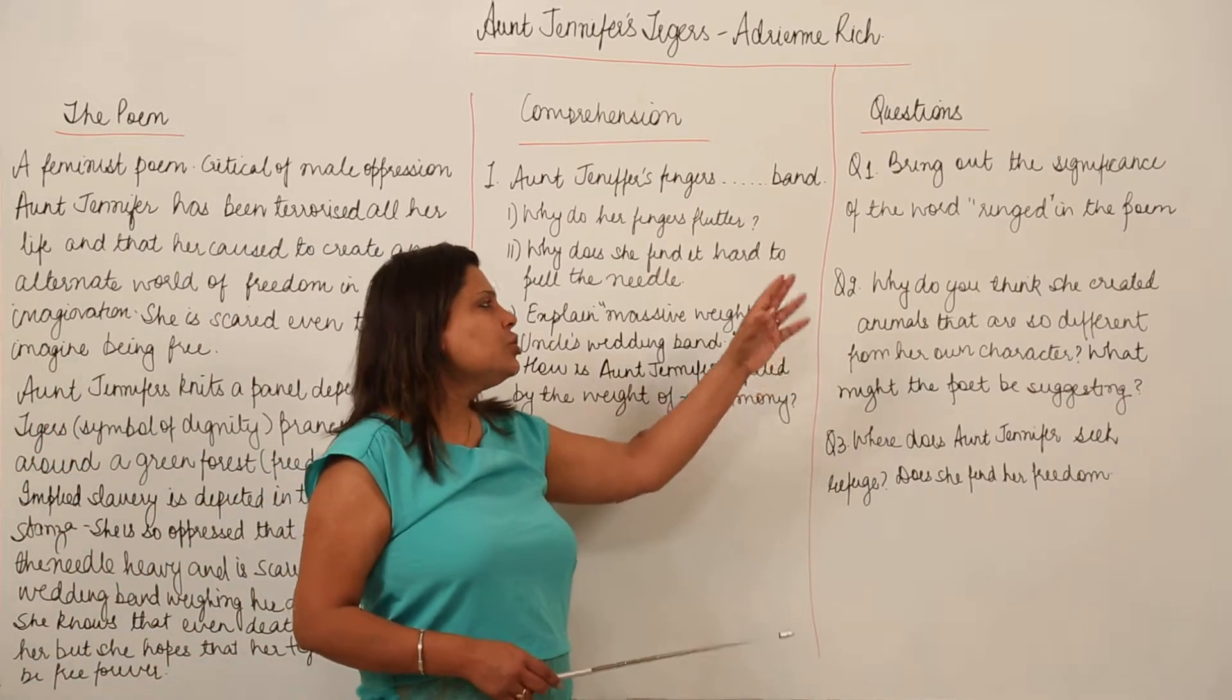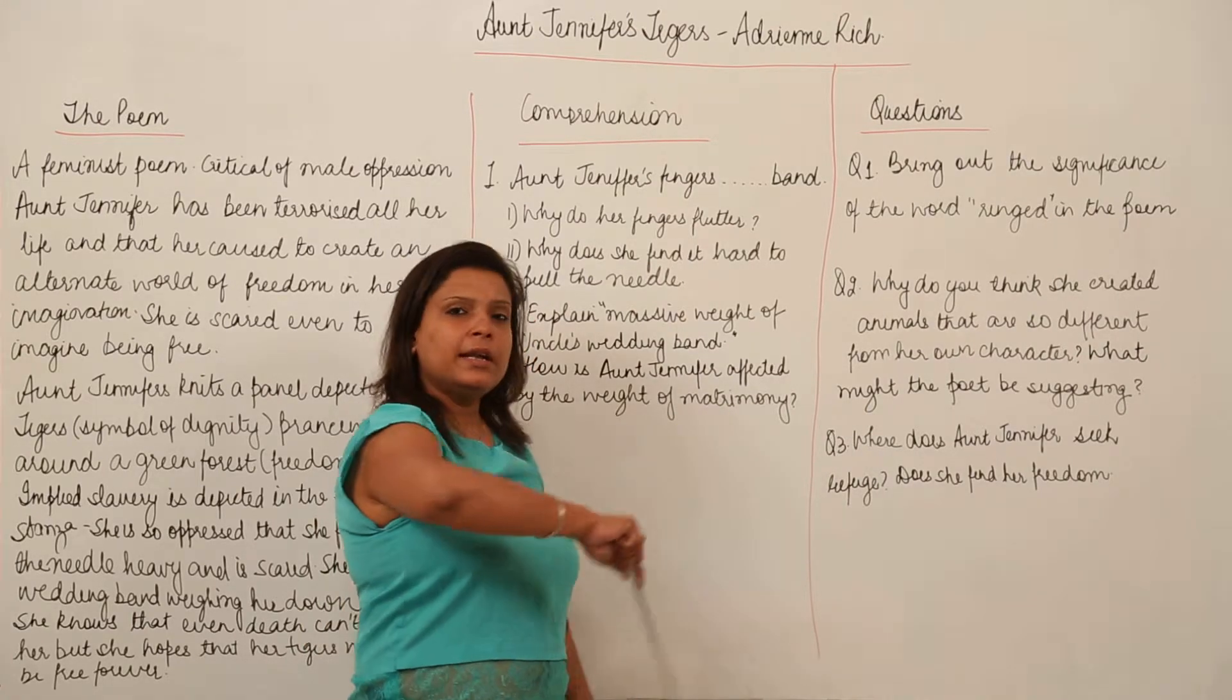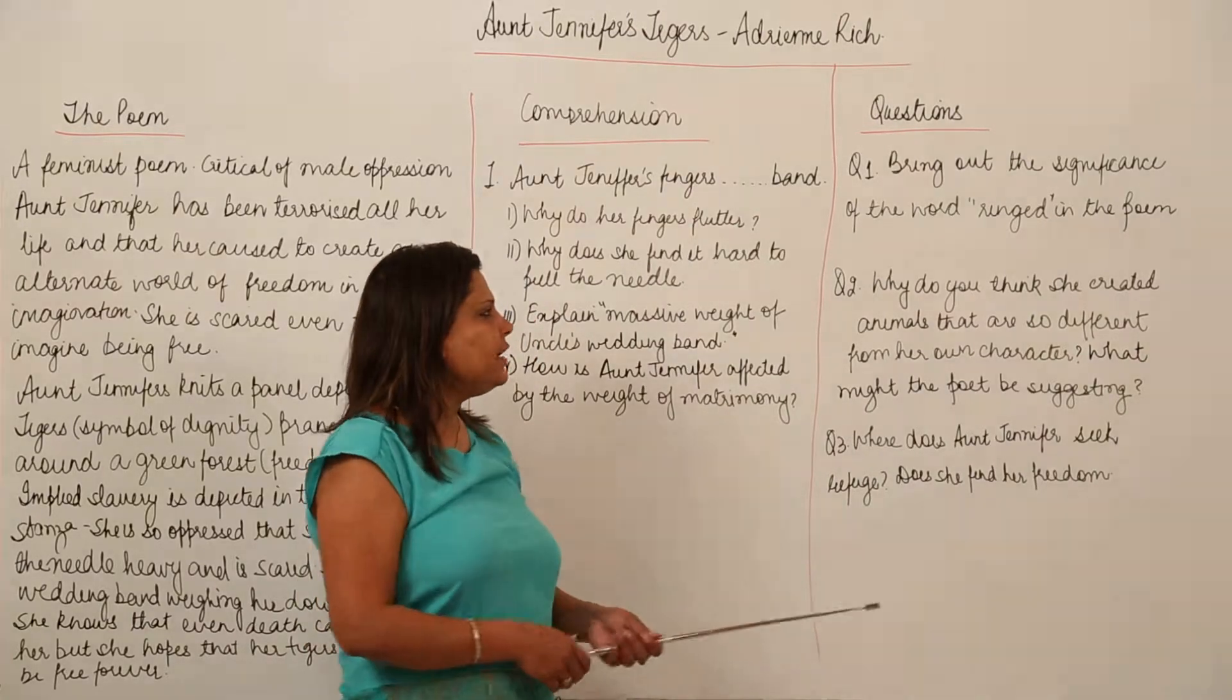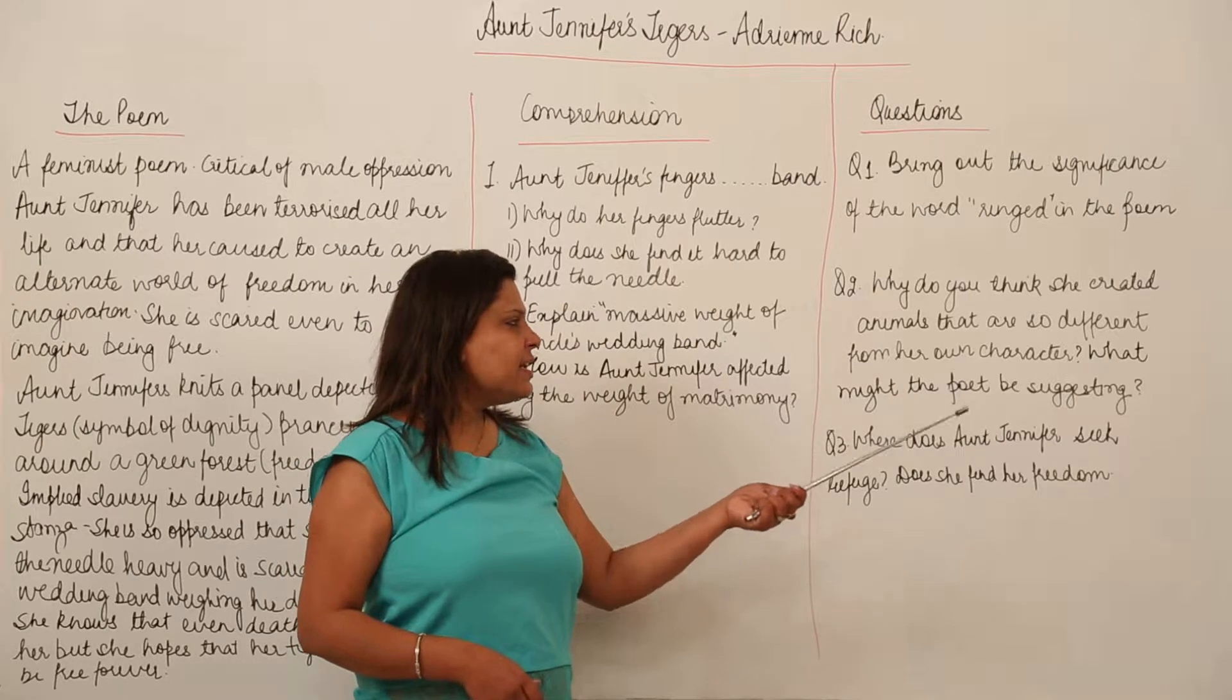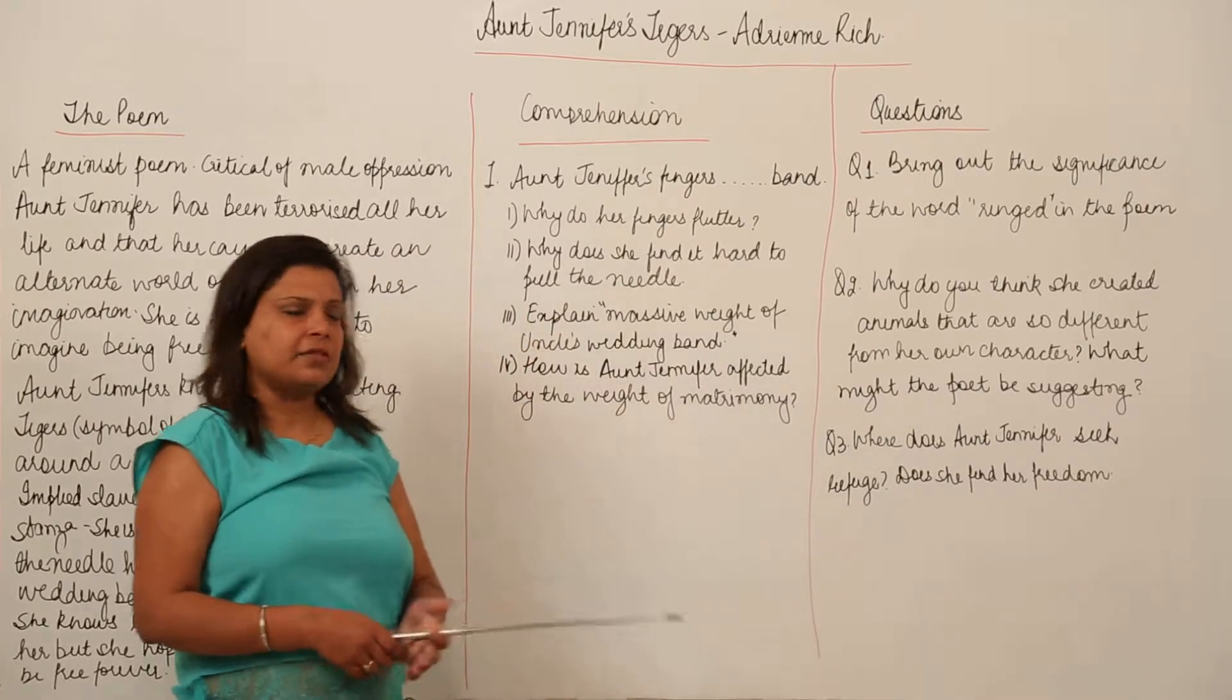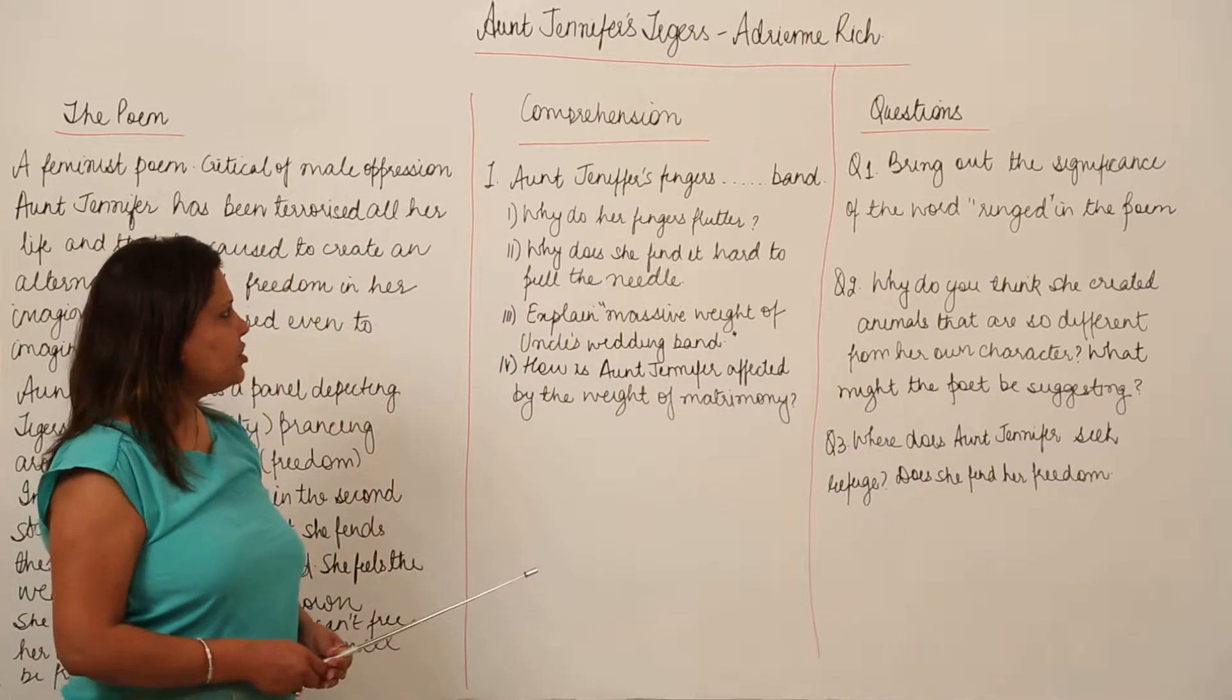Then there is a short answer question which will be mostly about the content of the poem and the style of the writing or about the incidents in the poem or the symbols, etc. Let's first do the comprehension.